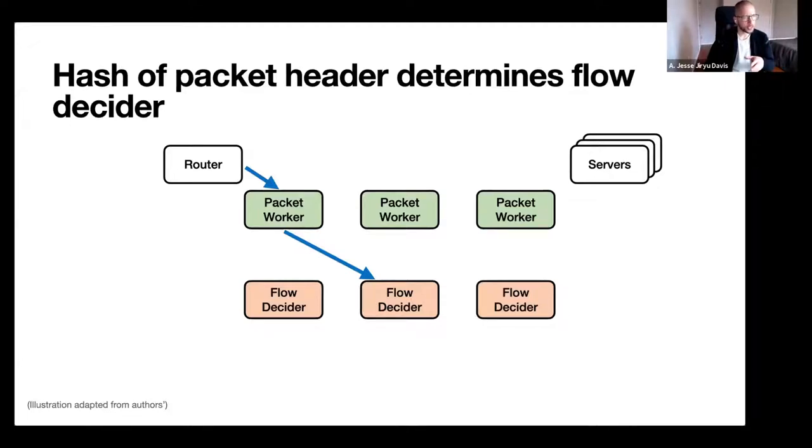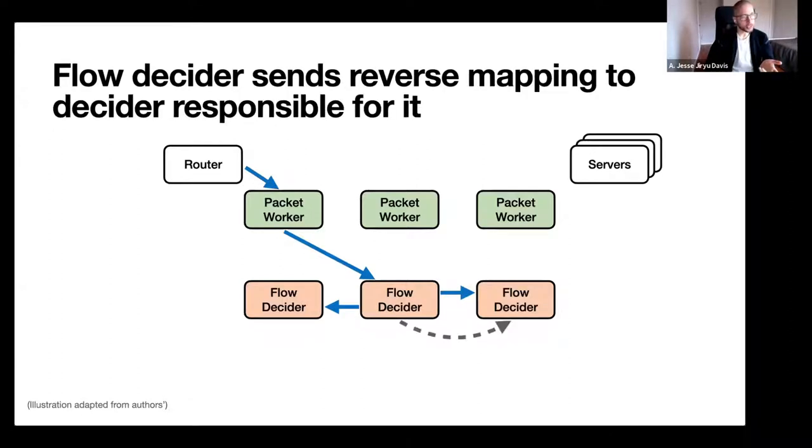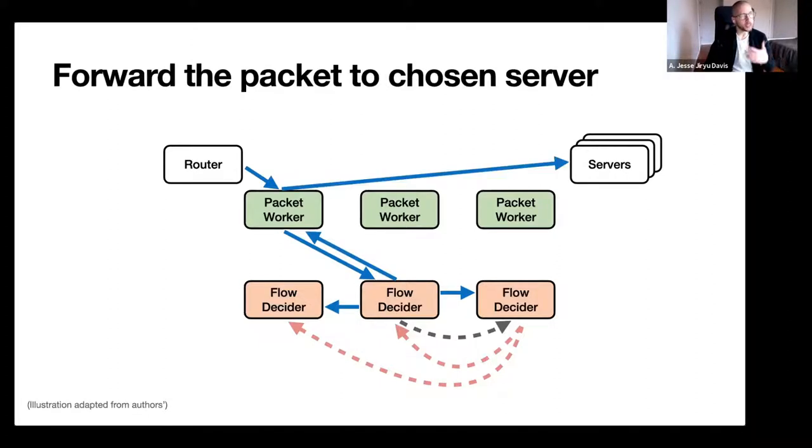The flow decider chooses which server in the end it should go to and replicates that mapping. It can determine which flow decider is going to receive the server's replies in the reverse flow, and it tells that flow decider to be ready. That flow decider also replicates the reverse mapping. Once all this rather surprising amount of work has been done for the first packet, the flow decider can finally tell the packet worker it's ready, and then the packet worker can actually forward the packet to the server. I find this system very surprising, but it's not the point of this paper. This is just the example system.